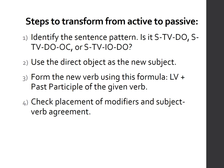Steps to transform from active to passive: first, you have to identify the sentence pattern. Because if it's S-I-V — an intransitive verb, for example 'the sun rises' — 'rises' is intransitive, therefore there's no receiver. If there's no receiver, it cannot be transformed to passive, because the receiver in the passive form will become the new subject. So you can only transform sentences that use a transitive verb.